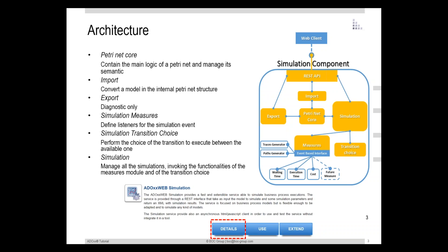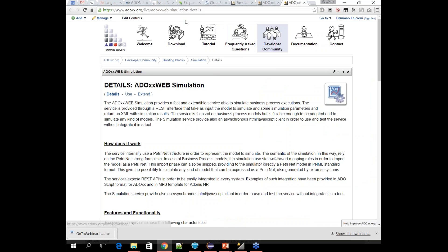Another extension point is the transition choice module, which gives you the possibility to implement your own way to perform a choice when a gateway event occurs — for example, when a gateway allows you to choose between two paths. The random distribution engine that generates the performance choice can be extended and adapted. Then there is the simulation module that manages all functions and provides the simulation capabilities. All the details of this service are available in the building block on the ADOXX website.